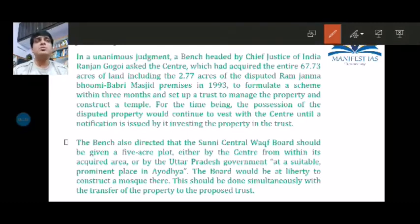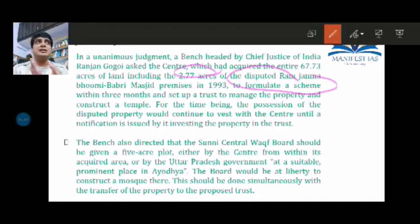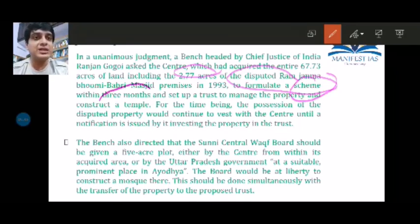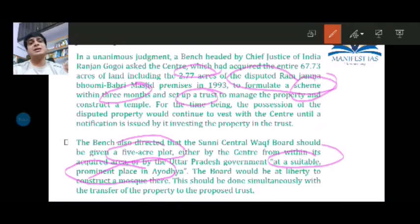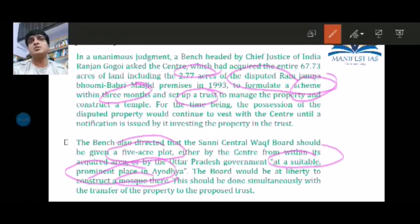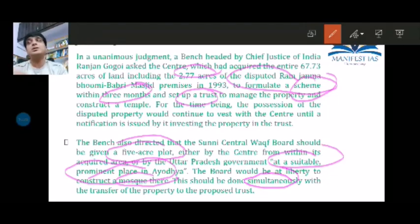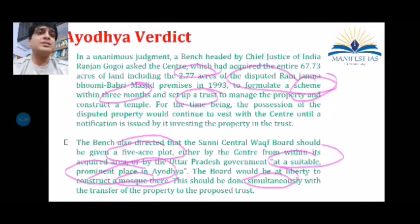The Supreme Court ruled that the 2.77 acres of disputed Ramjanmabhoomi land is now allotted to Hindus. It also went one step further, saying that a scheme should be formulated by the government within three months and a trust established to manage the property and construct the temple. With respect to Muslims, they will receive an alternative 5-acre plot at a suitable prominent place in Ayodhya itself, where they are at liberty to construct a mosque. Mosque construction is not the duty of the state — it depends on the Sunni Waqf Board.